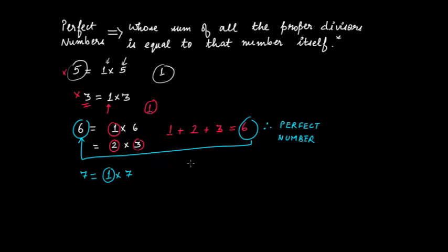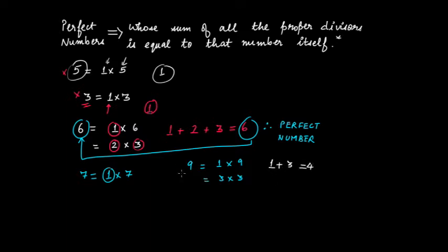What about nine? Nine can be written as one times nine and three times three. There are three factors of nine: one, nine, and three. Therefore, there are two proper divisors: one and three. Adding them gives four, and four is not equal to nine, so nine is not a perfect number.